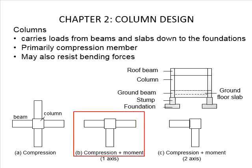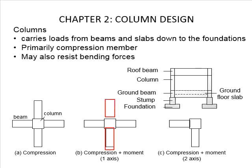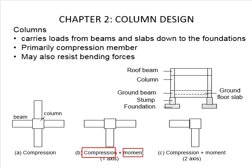Let us look at this arrangement of the beams. There are beams at both sides of the column, and the fixed-end moments generated by the beams acting on the column can cancel out each other. However, on this axis, one side of the column has a beam while the other side does not. This leads to a moment rotation of the column in this axis, and in this case the column is undergoing compression and a single axis moment.